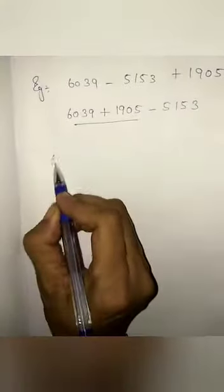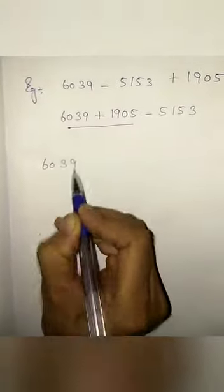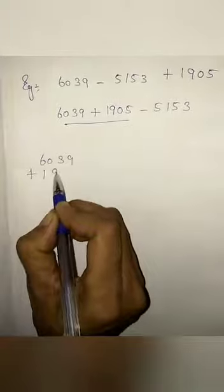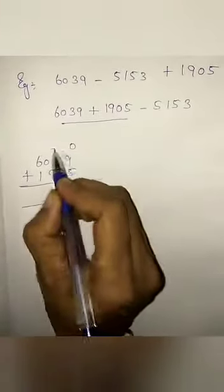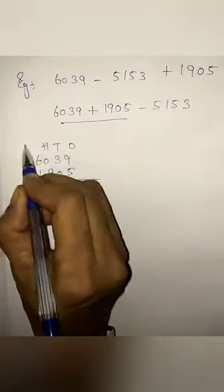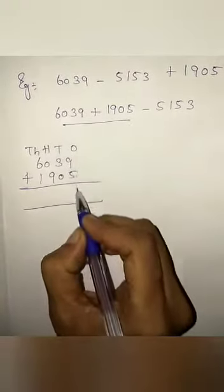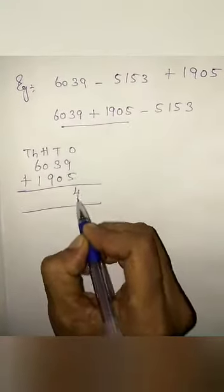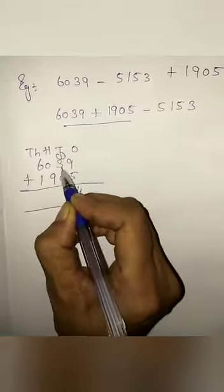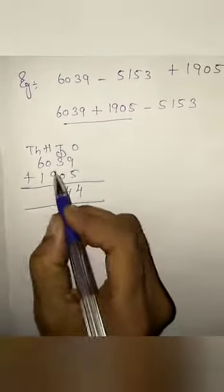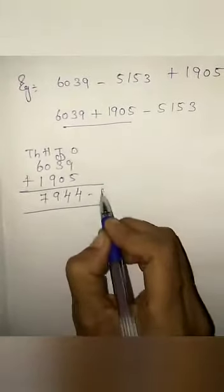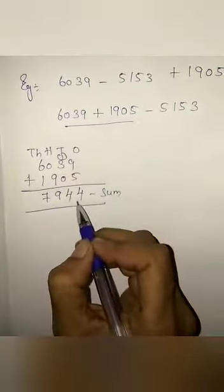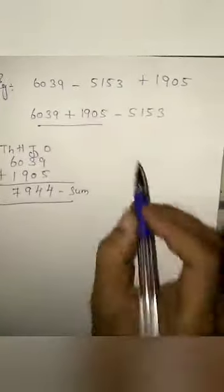First, we have to add these two numbers: 6039 plus 1905. Ones, tens, hundreds, thousands. 9 plus 5 is 14. 1 plus 3 is 4. 0 plus 9 is 9. 6 plus 1 is 7. The sum we got is 7944.